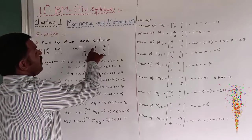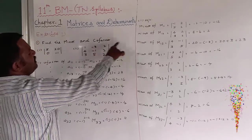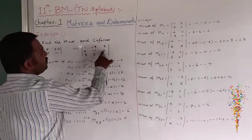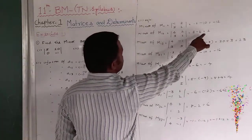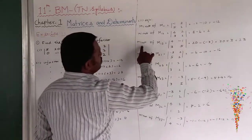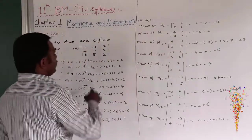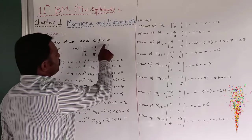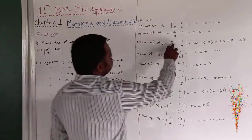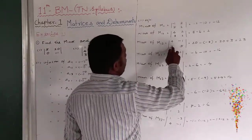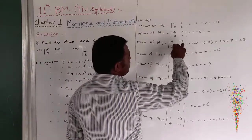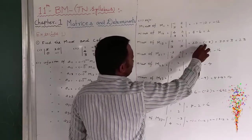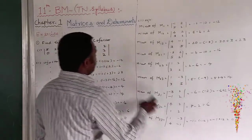Minor of M12 means first row second column — that is the meaning of M12. Remove that row and column, leaving 4, 2, 3, 2. So 8 minus 6 equals 2. Minor of M13 means first row third column. Remove that row and column: 4, 5, 3, minus 1. We get 20 minus half, and minus 3. So 20 plus 3 equals 23.